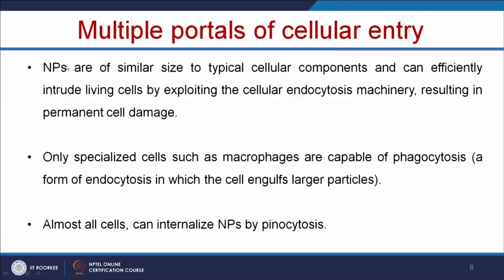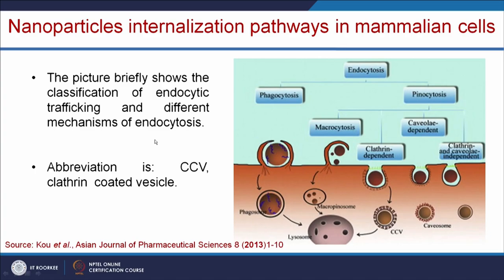Nanoparticles are of similar size to typical cellular components and can efficiently intrude living cells by exploiting the cellular endocytosis machinery, which can result in permanent cell damage. Only specialized cells such as macrophages are capable of phagocytosis — a form of endocytosis in which cells engulf larger particles — and almost all cells can internalize nanoparticles by pinocytosis. When nanoparticles go into the body, macrophages take up nanoparticles by phagocytosis (cell eating), and most other cells take up nanoparticles by pinocytosis (cell drinking).